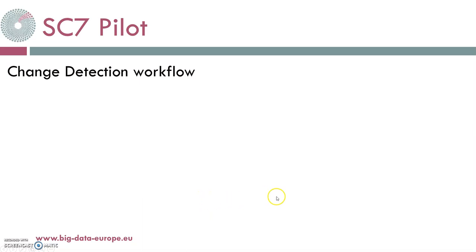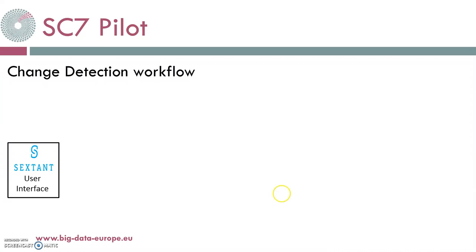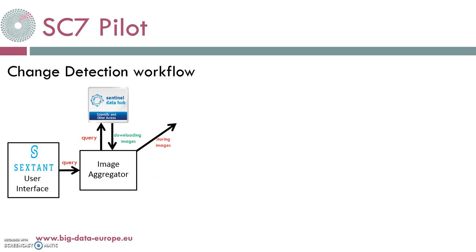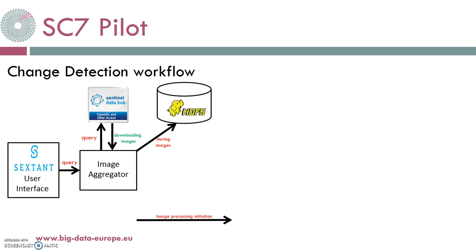About the Change Detection Workflow: we start with Sextant, which provides a graphical user interface and is also the entry point of the SC7 pilot. The qualified user selects a region on the map and two different dates of interest. Sextant makes a query towards Image Aggregator, which searches for the appropriate satellite images on Copernicus Open Access Hub of ESA. It finds the images and downloads them. Image Aggregator then stores the images in the HDFS and also initiates the Change Detector, which is an image processing component that runs on Apache Spark.